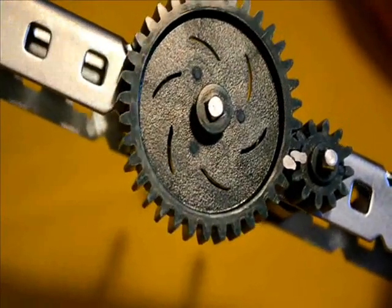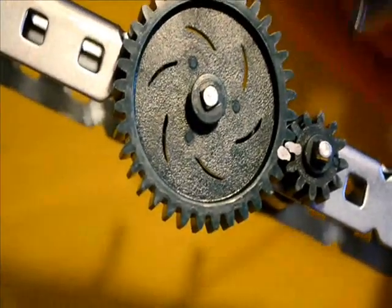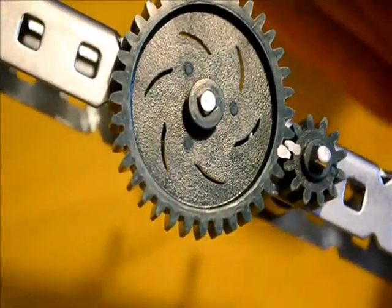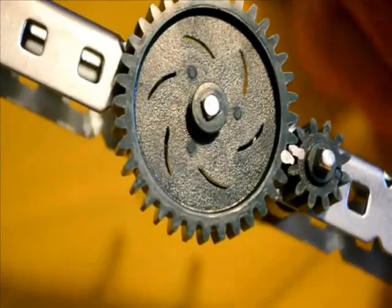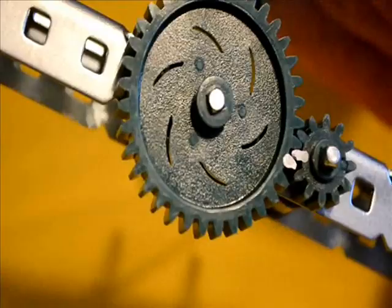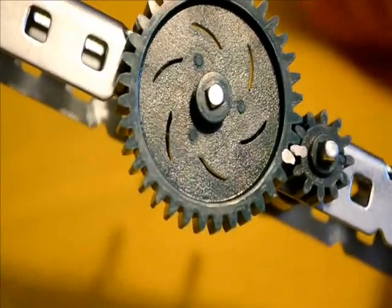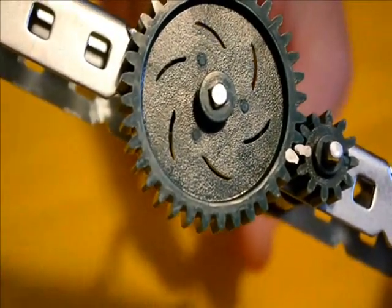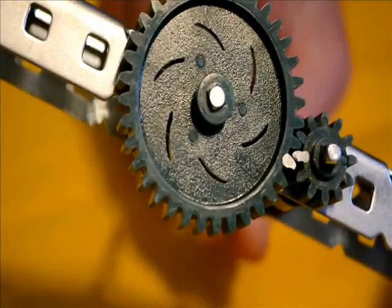Gear ratios consist of a driving gear and a driven gear. In this case, we are going to drive the 12-tooth gear and the 36-tooth gear is going to be driven. Let's see what happens as we start them turning around.